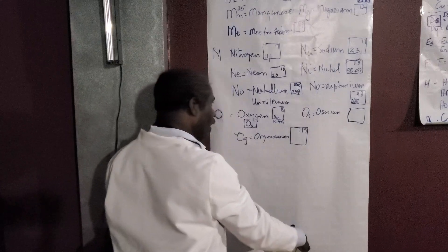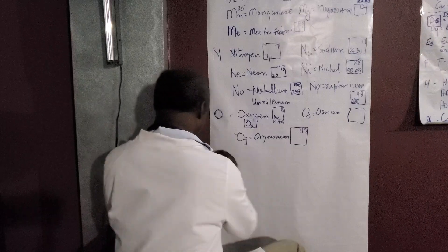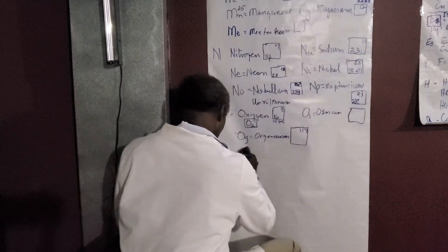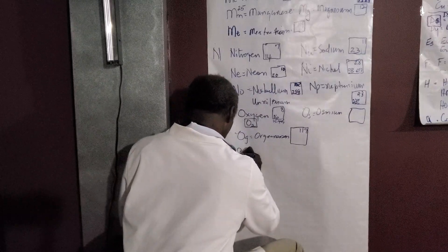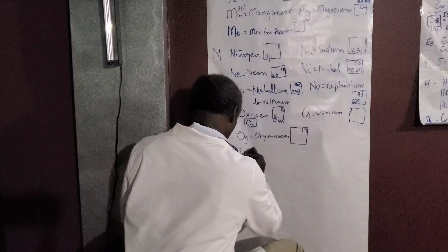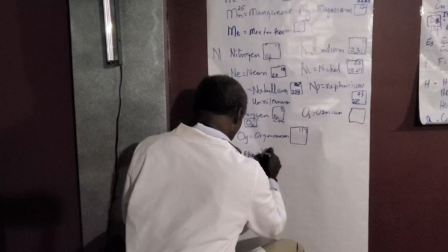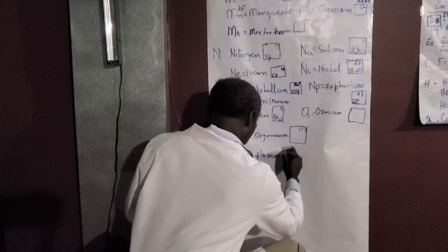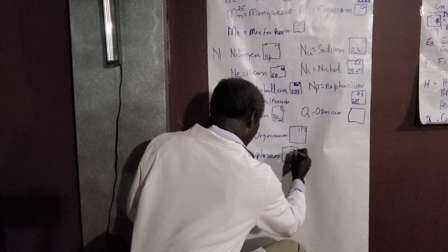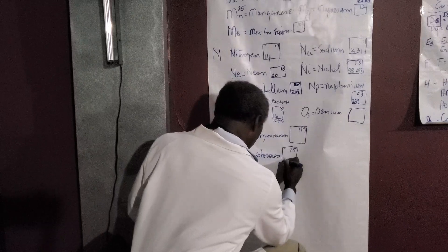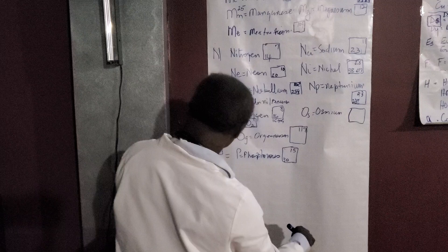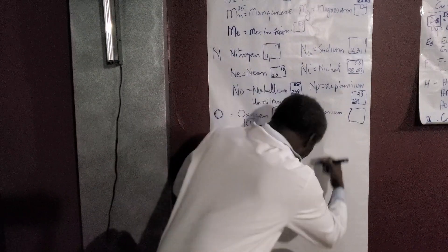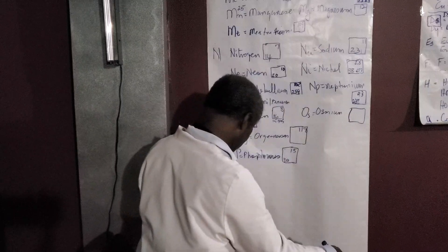Let's move on to P. For P, the first element will be phosphorus. Phosphorus has atomic number 15 and an atomic weight of about 30-point-something. Then we have PA as protactinium.